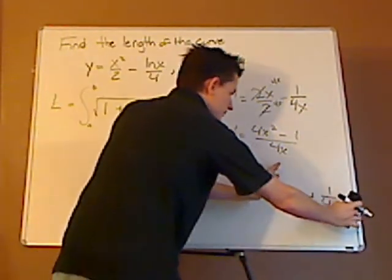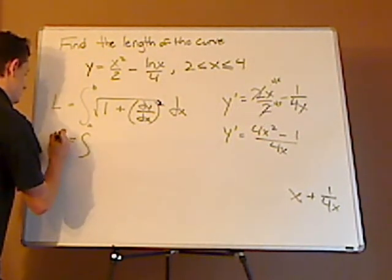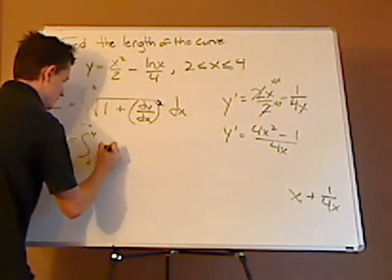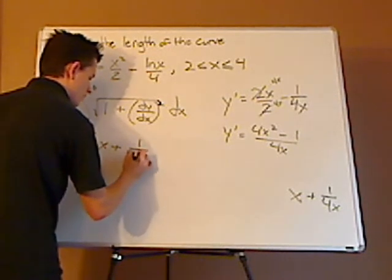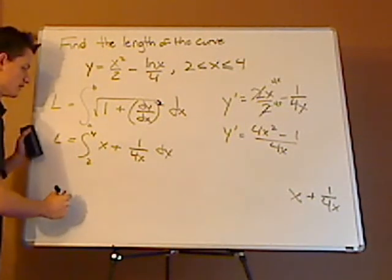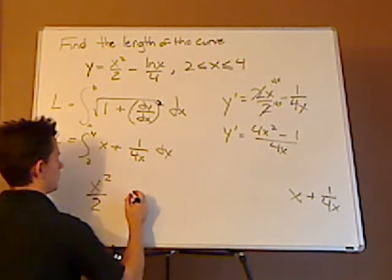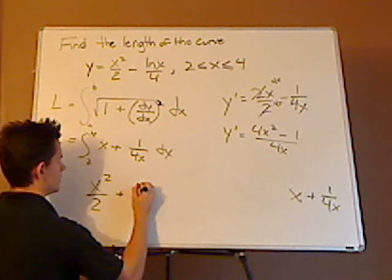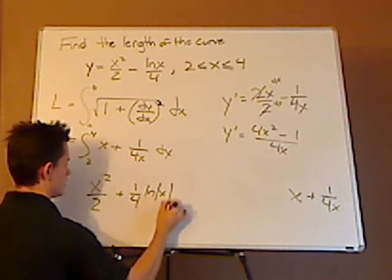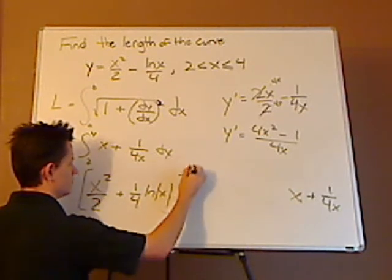So this goes here. Now it's going to be from 2 to 4, this is x plus 1 over 4x with respect to x. Then you integrate each of these. So this is going to be x squared over 2 plus this is going to be 1 fourth natural log of x, and this whole thing is going to be from 2 to 4.